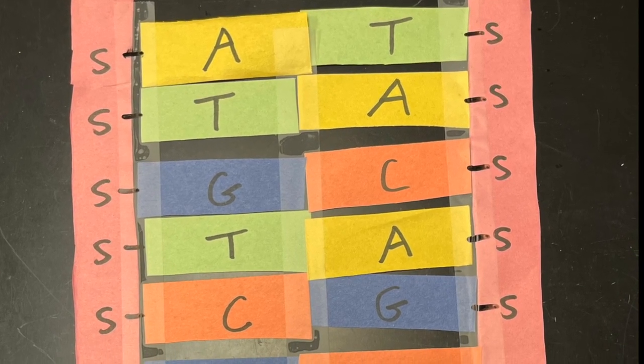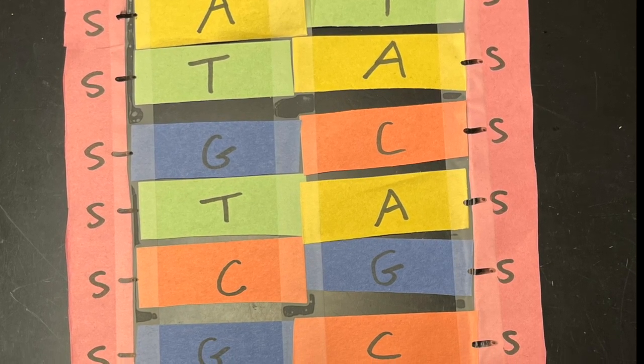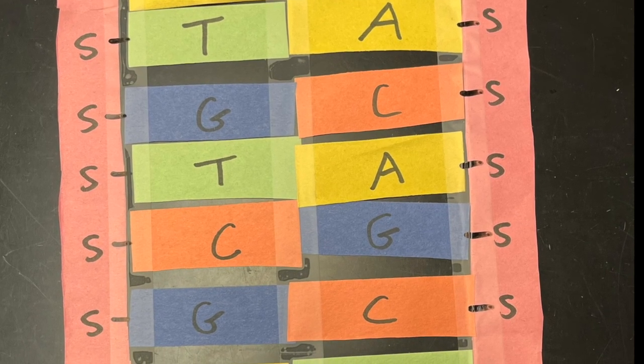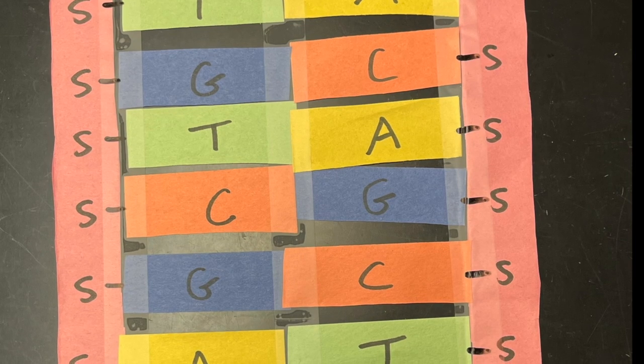And you're going to want to write an S at the end of each of those lines, the big S, and that's standing for a sugar, and because we're creating DNA here today, that's going to be representing the deoxyribose sugar.